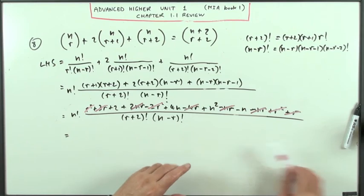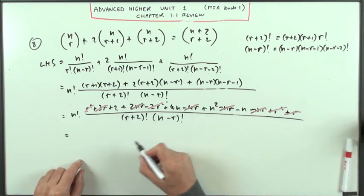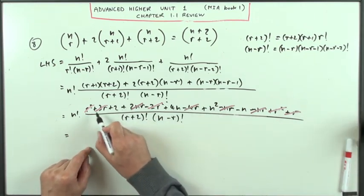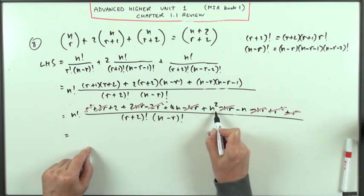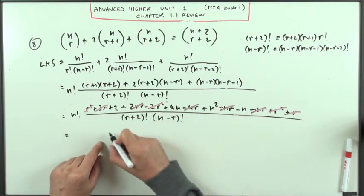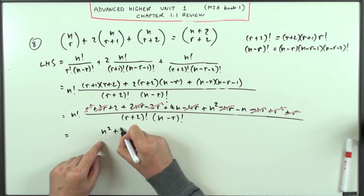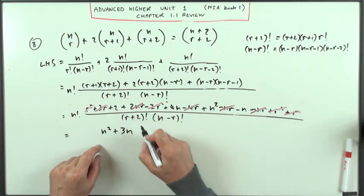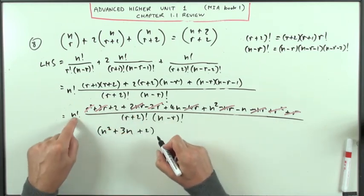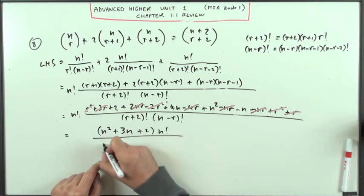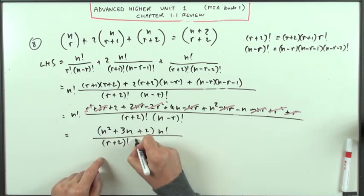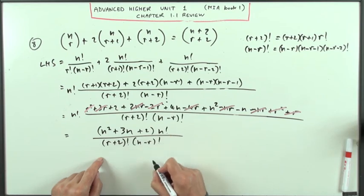Just a quadratic in n. So all I'm left with is n squared plus three n. I've got n squared plus three n plus two, times that n factorial, all over r plus two factorial, n minus r factorial.